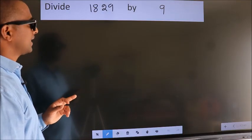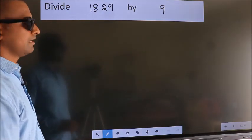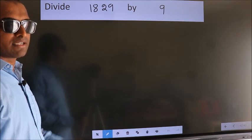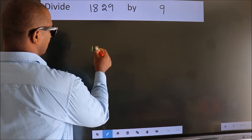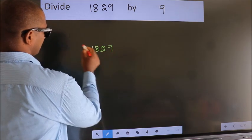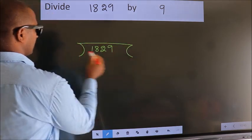Divide 1829 by 9. To do this division, we should frame it in this way. 1829 here, 9 here.